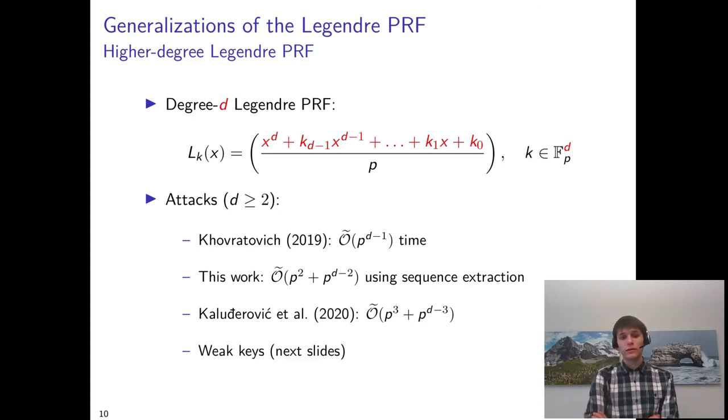Our trick of using multiplicativity also carries over to this setting and allows us to get an attack of p to the d minus 2 time, again using p queries.